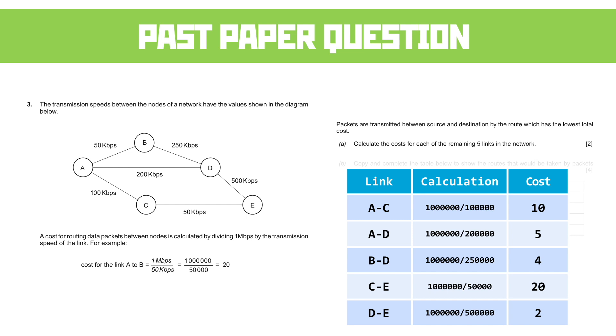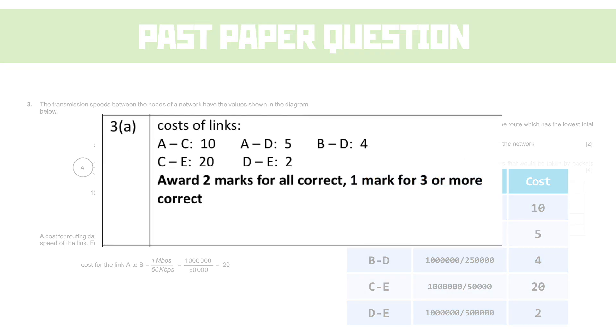Let's look at the mark scheme for that. As you can see, we've matched up, but look at the marks. Two marks for all correct, one mark for three or more. So you need to get over half of those right just to get even one mark for this. Ideally, you want to be looking to get all of them. It's a reasonably simple calculation.